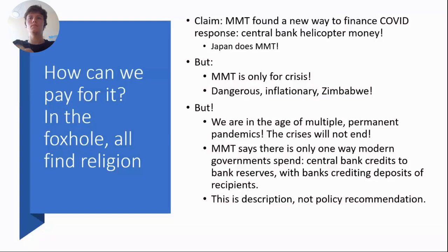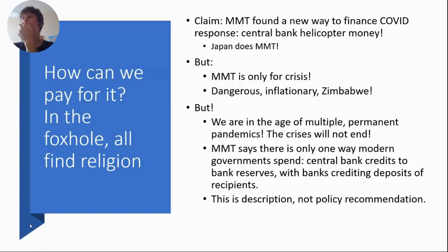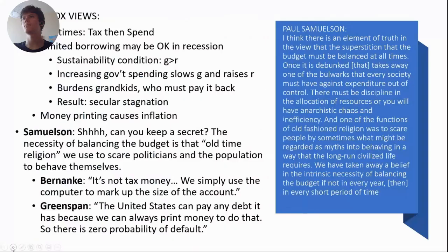They warned that MMT is only for a crisis, that it's temporary, dangerous, inflationary, a path to Zimbabwe. Our response is that first, we're in the age of multiple permanent pandemics — the crises are not going to end. Second, MMT says there's only one way modern governments spend: the central bank credits bank reserves and banks credit the deposits of the recipients. This is a description, not a policy recommendation. It's not something done only in a special crisis — this is simply how modern governments spend.